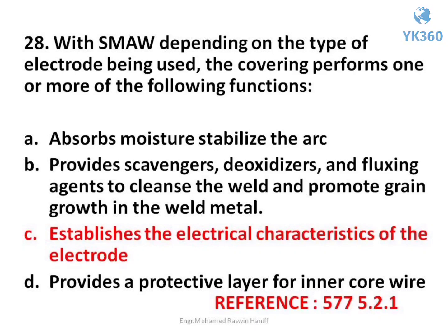Question number 28. With SMAW, depending on the type of electrode being used, the covering performs one or more of the following functions — options are: A. Absorbs moisture, stabilizes the arc, B. Provides scavengers, deoxidizers, and fluxing agents to cleanse the weld and promote grain growth in the weld metal, C. Establishes the electrical characteristics of the electrode, D. Provides a protective layer for inner core wire. Answer is option C. Establishes the electrical characteristics of the electrode.